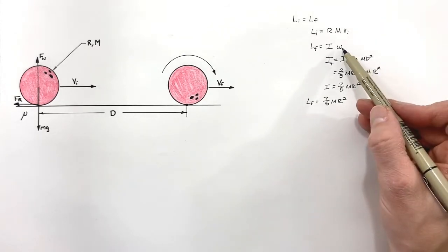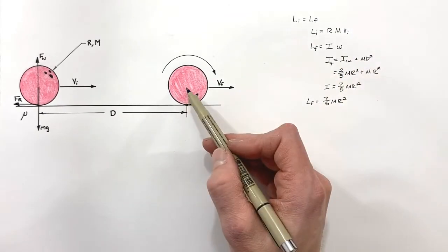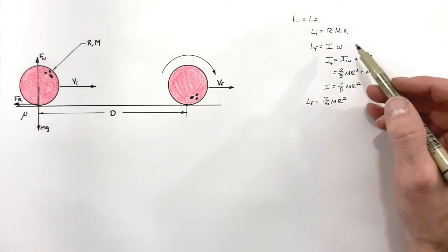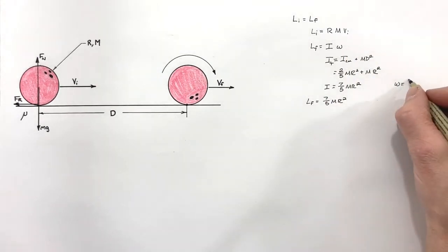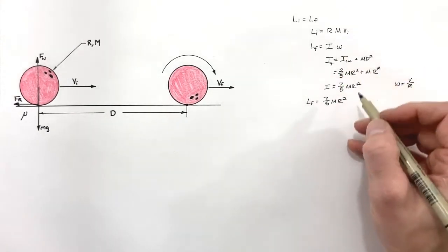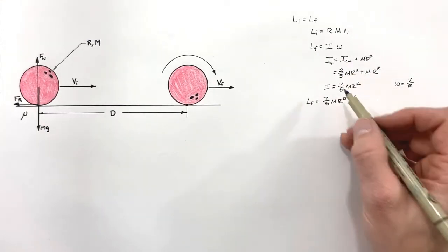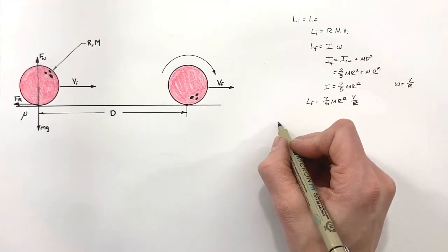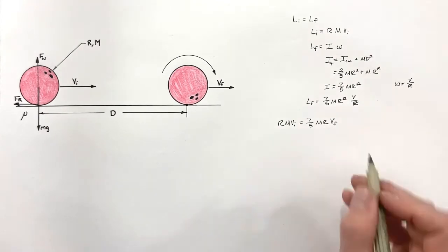Substituting in, we have (7/5)mR² times the angular velocity. Since this ball is rolling without slipping, the angular velocity omega equals v/R. Substituting this in gives us some cancellation, and equating this final angular momentum to our initial angular momentum we can solve for the final velocity.